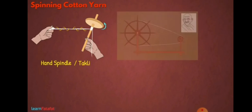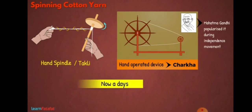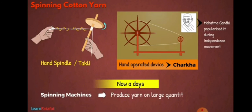A simple device used for making yarn is hand spindle. It is also called Takli. A famous hand-operated device is Charka. Mahatma Gandhi popularized it during independence movement. Nowadays, spinning machines are used to produce yarn in large quantity. These machines produce yarn with good quality.